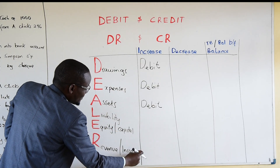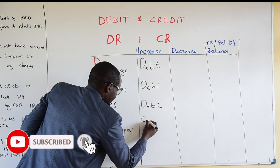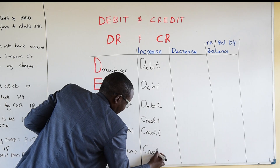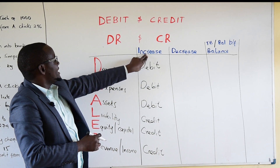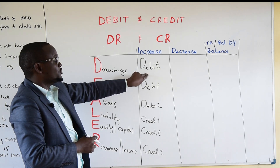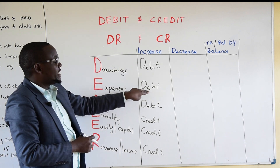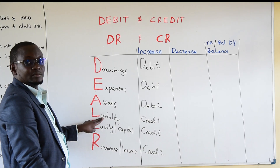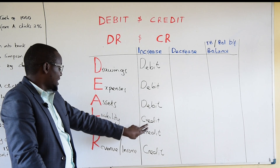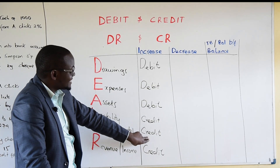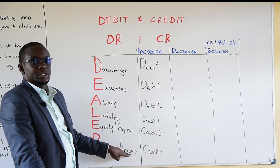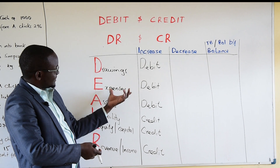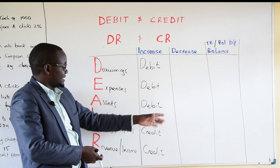For an increase, the last three components of DEALER are a credit. When there is an increase in drawings you debit the drawings account; when there is an increase in expenses you debit the expense account. When there is an increase in liability — for instance creditors — you credit that liability account. When there is an increase in capital or equity you credit that capital account. When there is an increase in revenue or income — for instance sales — you credit that account. So the first three is debit and the last three is credit for an increase.